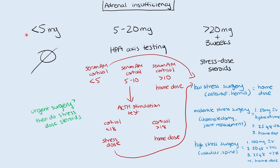Quick recap on adrenal insufficiency: less than 5 mg prednisone — continue home dose. Greater than 20 mg for more than three weeks — do stress dose steroids. Between 5 and 20 mg — do HPA axis testing starting with serum AM cortisol. If less than 5, empirically treat; greater than 10, give home dose; if indeterminate, check ACTH stimulation test. If greater than 18 on that test, continue home dose; if less than 18, give stress dose steroids.